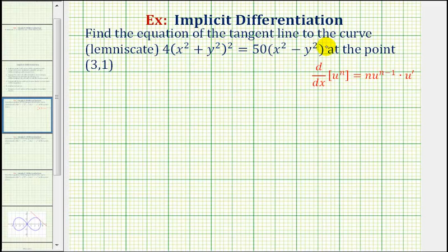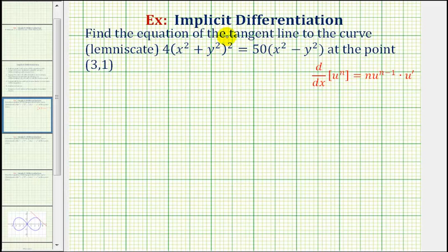We want to find the equation of the tangent line to the curve 4 times the quantity x squared plus y squared to the second power equals 50 times the quantity x squared minus y squared, at the point (3, 1). To find the equation of the tangent line, we'll need to find the slope, which we can find by determining dy/dx. Since we have an implicit equation, we'll have to perform implicit differentiation.